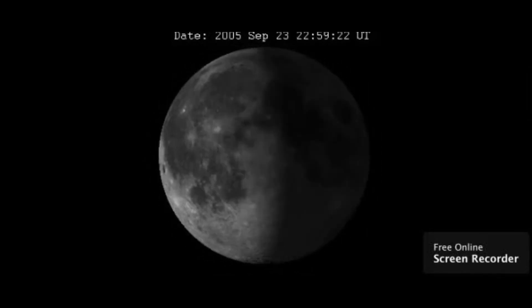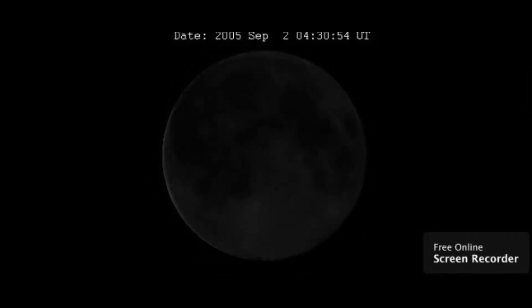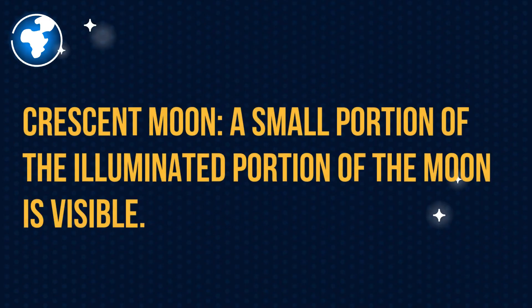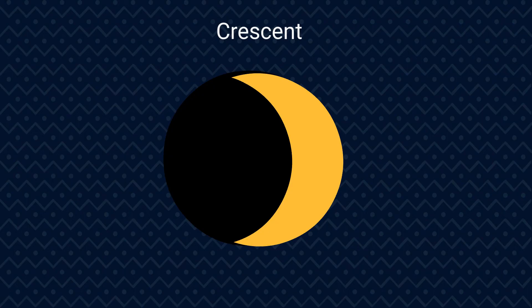Next we have a crescent moon. A small portion of the illuminated part of the moon is visible. Here's what a crescent moon looks like — notice the small part that is illuminated.